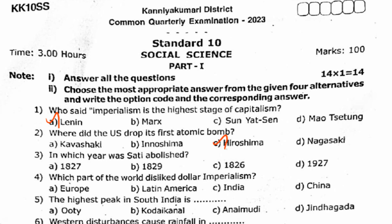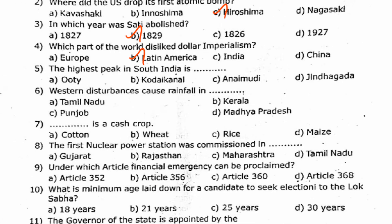Next, in which year was sati abolished? Answer is option B. Next, which part of the world dislikes dollar imperialism? Answer is option B. Next, the highest peak in South India is? Answer is option C.